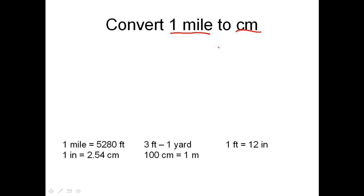The first thing I want to do is read the problem well, and then list those givens. So I'm given one mile — I write that down. And on the other side, I set up a bookend to remind us that we're going to be traveling towards centimeters. The conversion factors we need will fill up the middle of the problem.